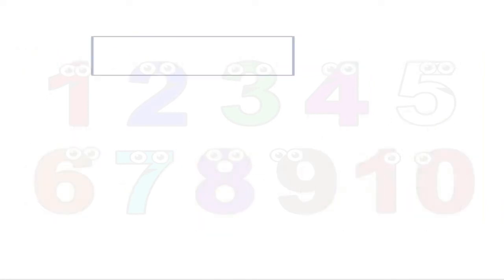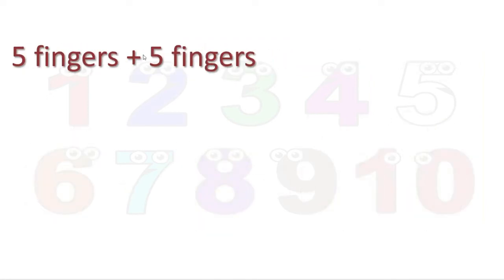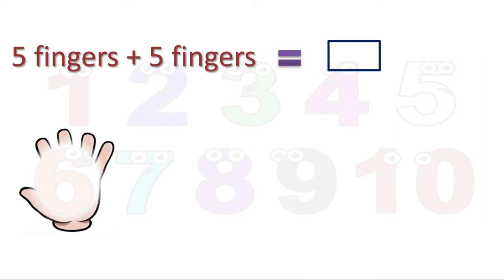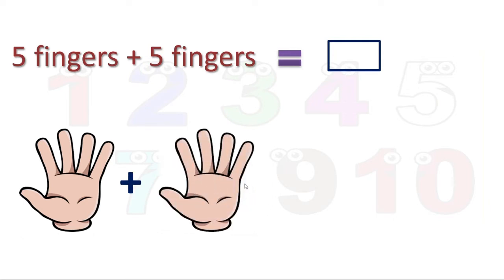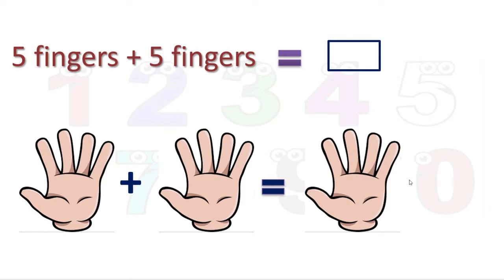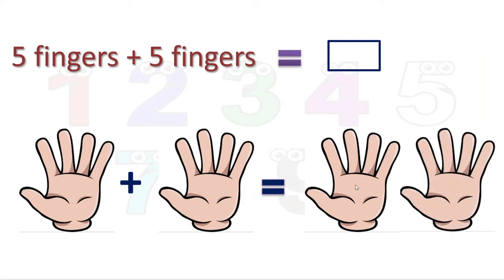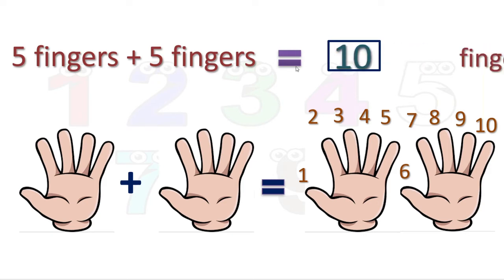Five fingers plus five fingers is equal to how many fingers? Here are our five fingers of one hand and five fingers of the other hand — two hands. Both together, our hands have ten fingers. These are five: one, two, three, four, five. Next number comes six, seven, eight, nine and ten. So five fingers plus five fingers gives us ten fingers. This is the counting forward method.